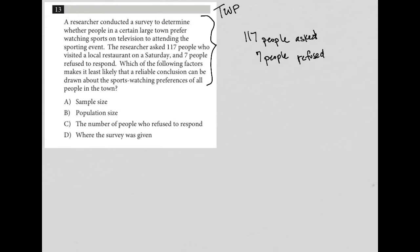So we're not truly doing anything quantitatively here. We do know that 117 people were approached or asked. Seven people did not respond. So, right, we only got 110 people responded. And we have this weird information about it being on a Saturday and it being at a local restaurant. Right. And that the survey was conducted to figure out people's preferences on watching sports on television versus a live sporting event.